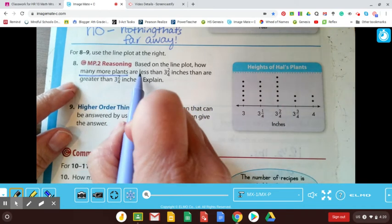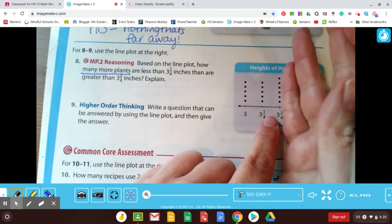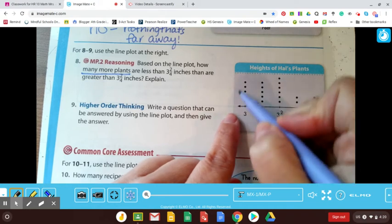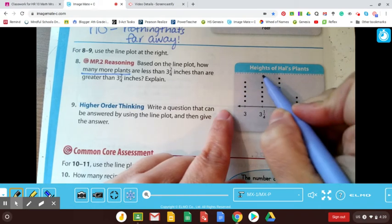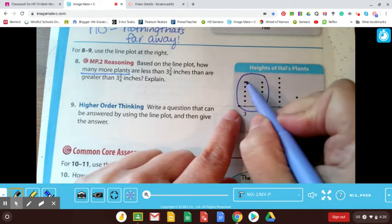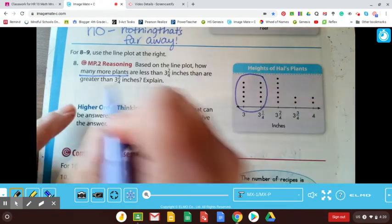So less than three and two fourths. So let's see. Here's three and two fourths. So less would be this way. So these would be all of the plants that are less than three and two fourths. And how many are there? Well, let's count them. One, two, three, four, five, six, seven, eight, nine, ten. So that's ten.